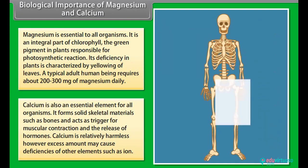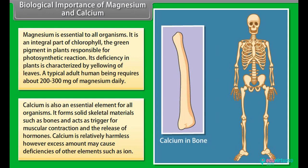A typical adult human being requires about 200 to 300 mg of magnesium daily. Calcium is also an essential element for all organisms. It forms solid skeletal materials such as bones and acts as trigger for muscular contraction and the release of hormones. Calcium is relatively harmless, however excess amounts may cause deficiencies of other elements such as iron.